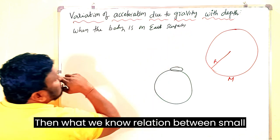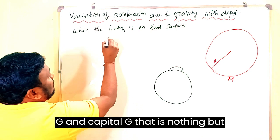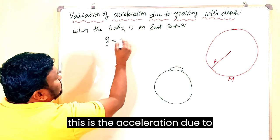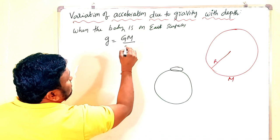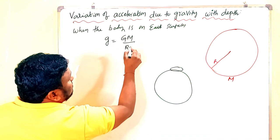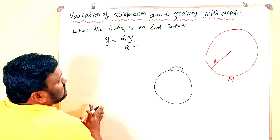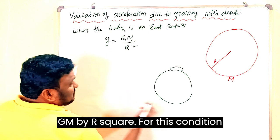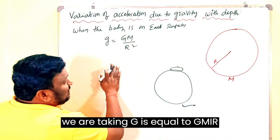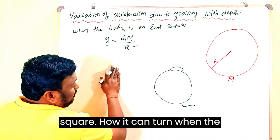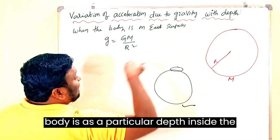When the body is on the Earth's surface, the relation between small g and capital G is: acceleration due to gravity on the Earth's surface is g = GM/R². We take this as our starting equation for the condition when the body is on the surface. Now let's discuss what happens when the body is at a particular depth inside the Earth.